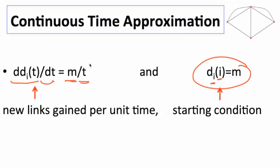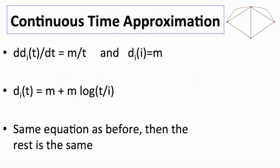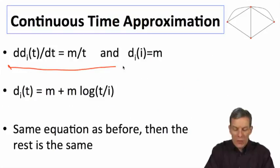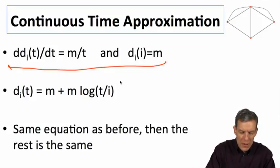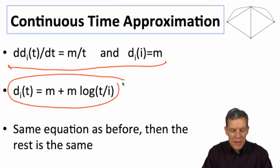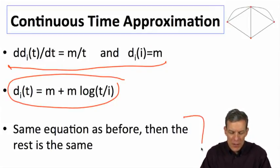Now we have a differential equation which says that this is the change over time, this is the initial starting condition, and that's something that's fairly easy to solve. If you solve a differential equation with this starting condition and this differential, you end up with d_i(t) equals m plus m times log(t/i). It's exactly the same equation as before.